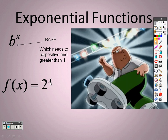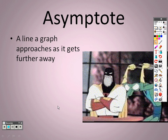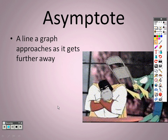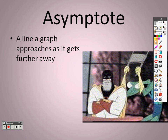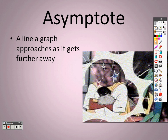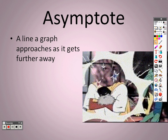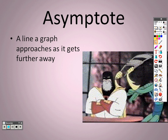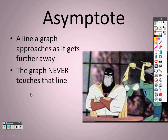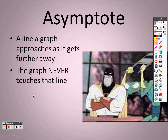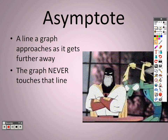An asymptote is a line on the graph — kind of like an invisible line — that your graphed line will approach but never quite touch. The closer and closer it gets, it looks like it's going to touch it, but it actually does not. Your graph gets really close to it but never touches that line.